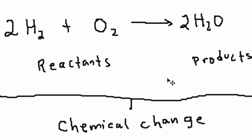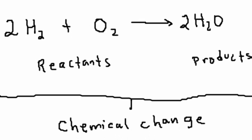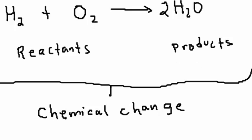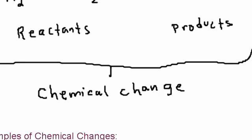In chemistry, the things that you combine to form a product — the things on the left — are called the reactants, and the thing you have on the right is called the product. This is an example of a chemical change.